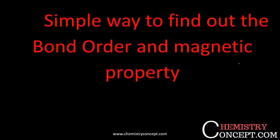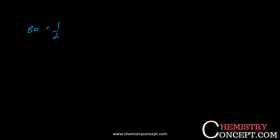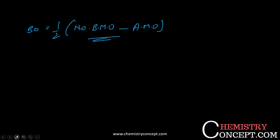Hello everybody, welcome to Chemistry Concept. Today we'll be discussing how to find out the bond order and the magnetic property of a molecule within a second. Traditionally, bond order is equal to half of the number of electrons in bonding molecular orbitals minus the electrons in anti-bonding molecular orbitals. If the electrons in the HOMO are fully filled or paired, then the molecule is diamagnetic; otherwise it is paramagnetic.